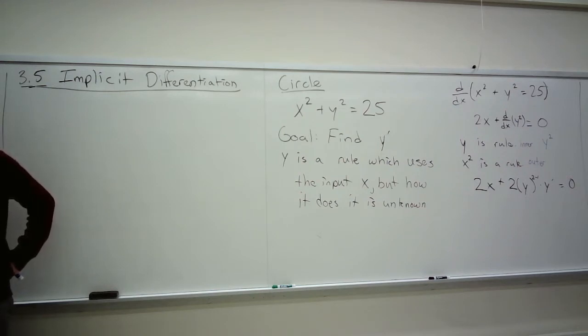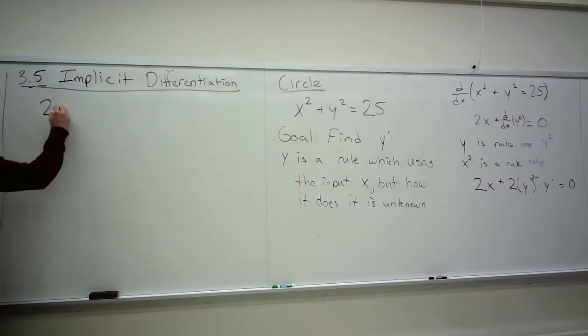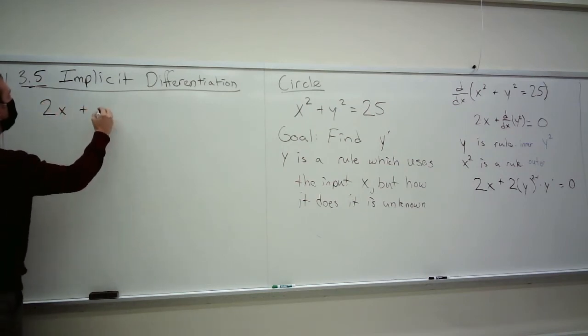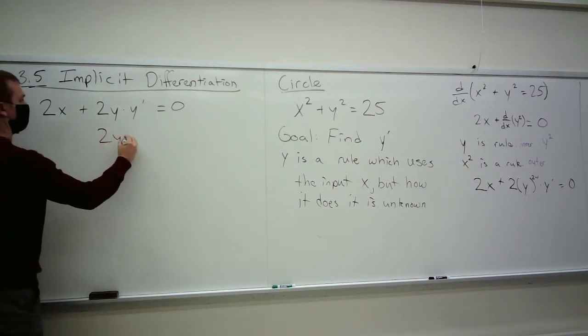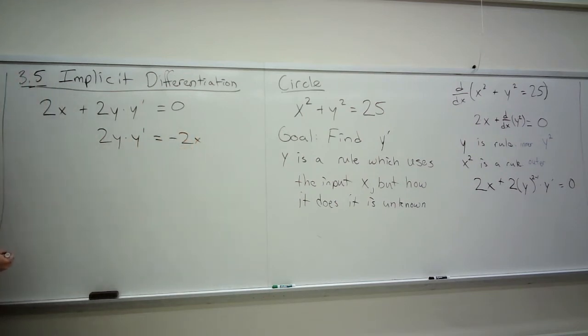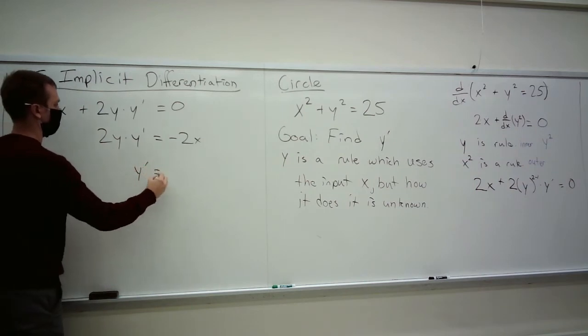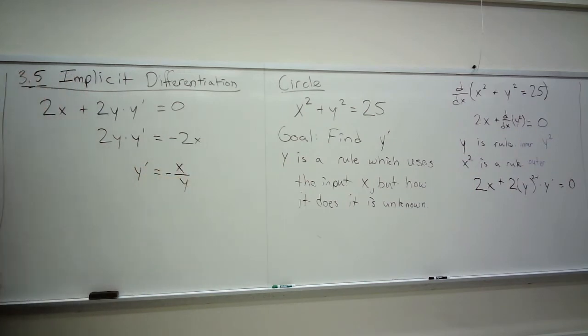Great questions. Other questions before I continue? I'm going to have to erase something here, I think. No questions yet? So, we've got that. I'll just rewrite it here. 2x plus 2y times y prime. That is nothing. So, our goal is to find y prime. Can you find it? Can you solve this for y prime? Yeah. Absolutely. Subtract 2x over. Divide by 2y. And you've got it. That easy.